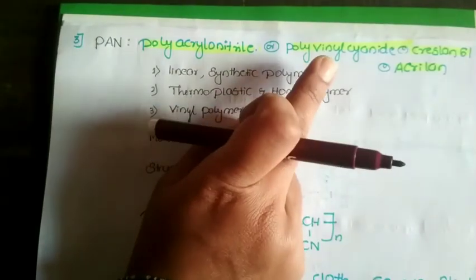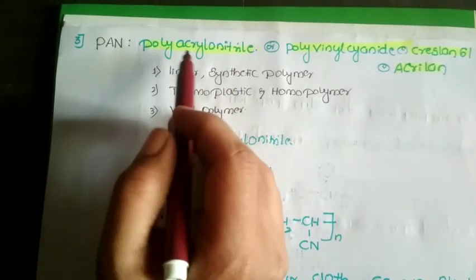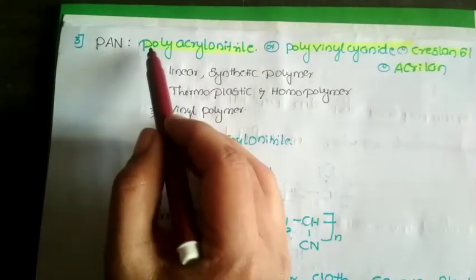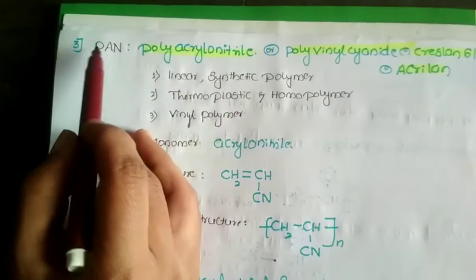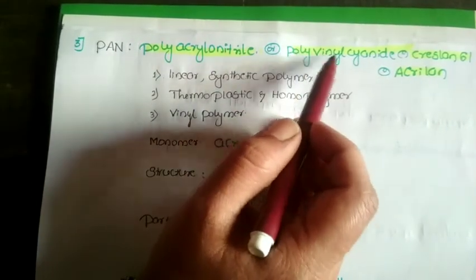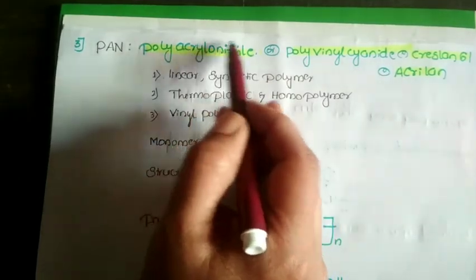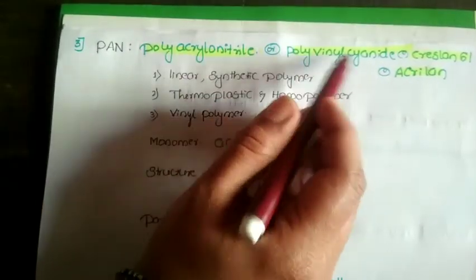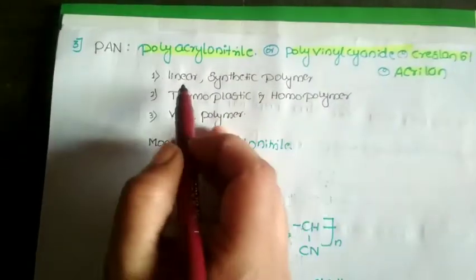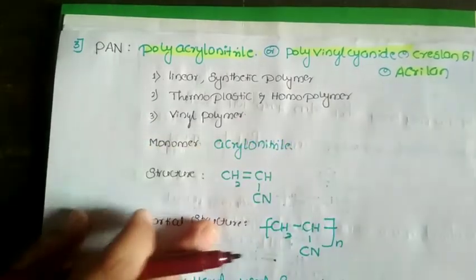Next is PAN — polyacrylonitrile. A question based on this appeared in a previous Karnataka CET exam. PAN stands for polyacrylonitrile, also known as polyvinyl cyanide, Creslon 61, or Acrylan. It is a linear synthetic polymer, a thermoplastic, a homopolymer, and a vinyl polymer.